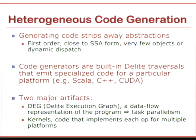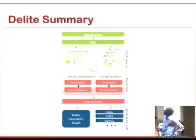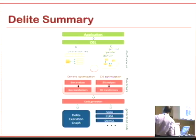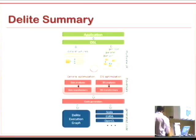Here's the overall view of the Delite compiler system. You start with a DSL that defines operations and data structures. These operations are defined in an IR with multiple views. You transform this IR using generic and domain-specific optimizations via analyses and transformers based on traversals. At the end, the last kind of transformer is a code generator, which generates a Delite execution graph. Each node in the graph can be a kernel generated in multiple low-level programming languages such as CUDA, OpenCL, C++, and so on.